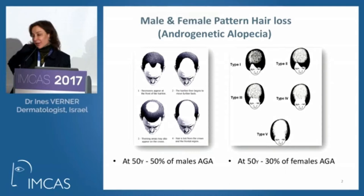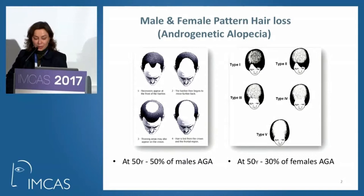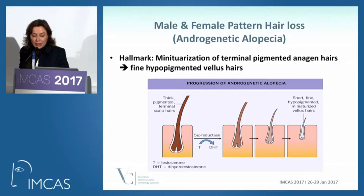Male and female pattern hair loss are quite common. At age 50, about 50% of males will have male pattern hair loss and about 30% will have some female hair loss. The hallmark of male and female pattern hair loss is actually miniaturization of the terminal pigmented anagen hair.